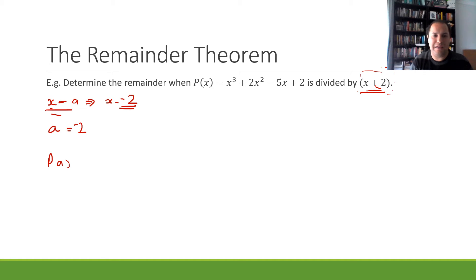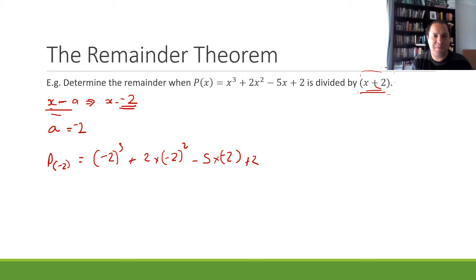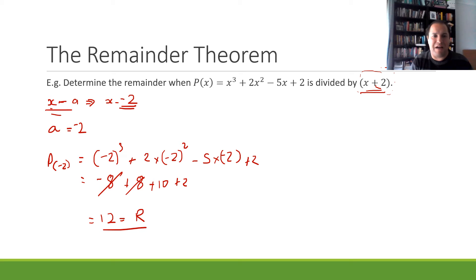Now we can find our remainder by substituting that value into our equation: p(−2) equals (−2)³ + 2(−2)² − 5(−2) + 2. That gives us −8 plus 8 plus 10 plus 2. Negative 8 plus 8 cancel, which leaves us with 12.